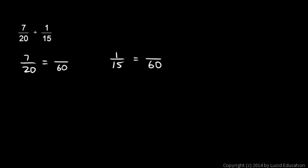20 times what gives me 60? 20 times 3. So I also multiply the 7 times 3. 7 times 3 is 21. 15 times what gives me 60? 15 times 4. So I also multiply the 1 times 4, and that's just 4. So I have 21 over 60 and 4 over 60, and that's pretty easy. 21 over 60 plus 4 over 60 equals 25 over 60.